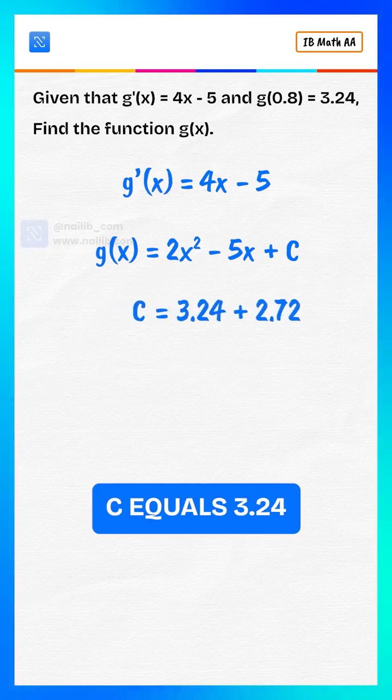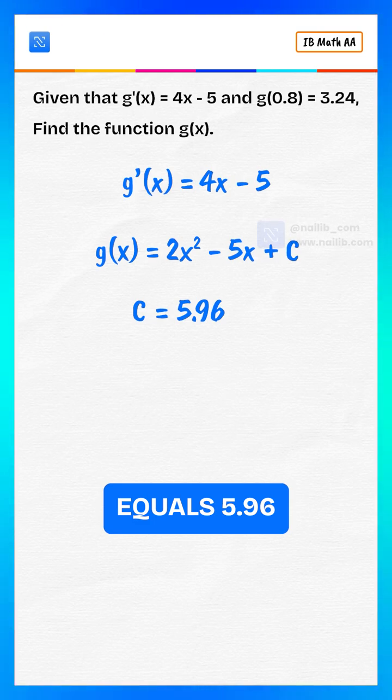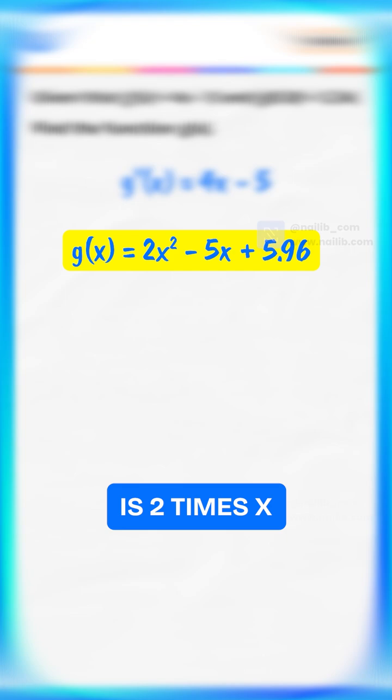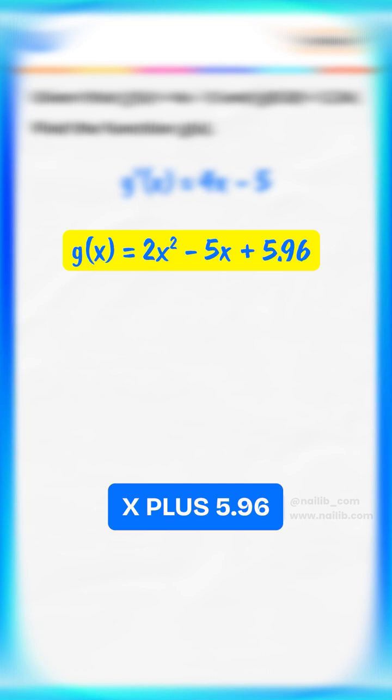c equals 3.24 plus 2.72, then c equals 5.96. So, the function g of x is 2 times x squared minus 5 times x plus 5.96.